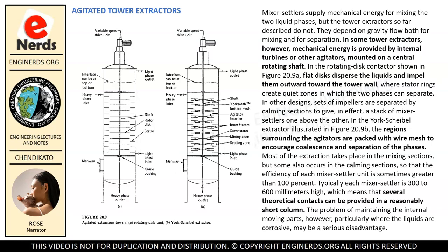Next we have the agitated tower extractors. Mixer settlers supply mechanical energy for mixing the two liquid phases, but the tower extractors so far described do not — they depend on gravity flow both for mixing and for separation. In some tower extractors, however, mechanical energy is provided by internal turbines or other agitators mounted on a central rotating shaft. In the rotating disc contactor shown in Figure 20.9A, flat discs disperse the liquids and impel them outward toward the tower wall, where stator rings create quiet zones in which the two phases can separate. In other designs, sets of impellers are separated by calming sections to give, in effect, a stack of mixer settlers one above the other.